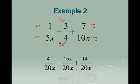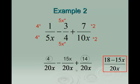Now that we have our common denominator, we keep it and combine any like terms on the tops. We have like terms of 4 and 14. They combine together to make 18, minus 15x, all over our common denominator of 20x.